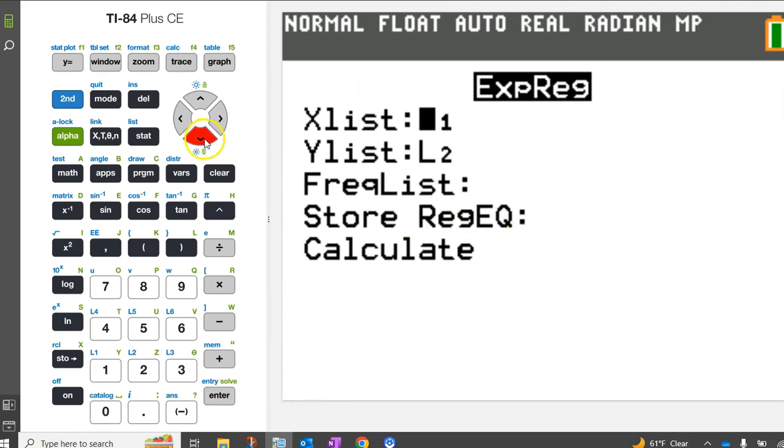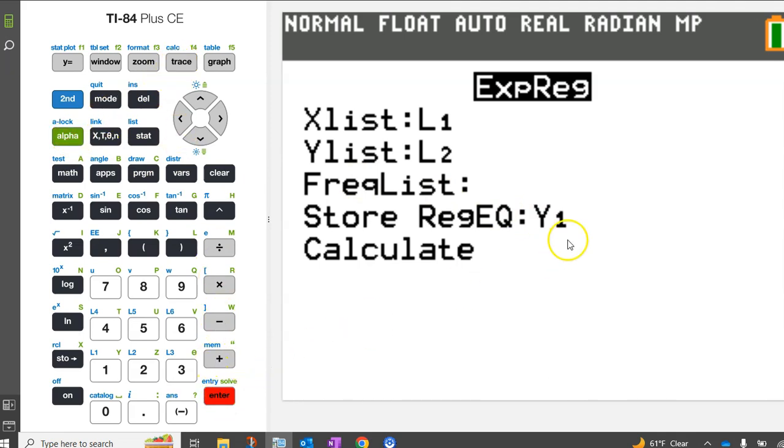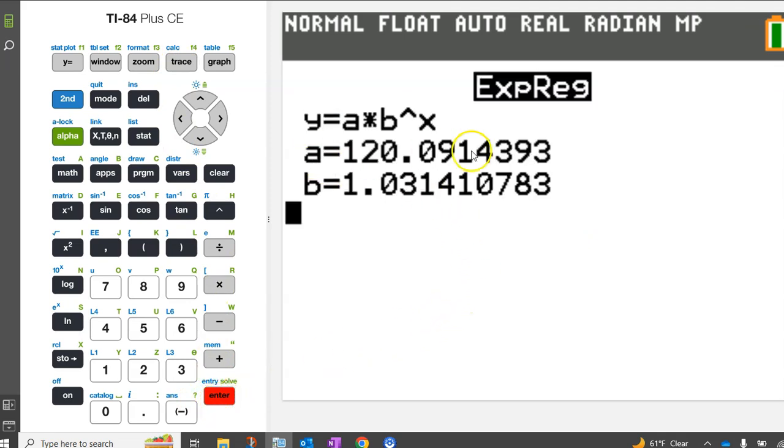Before you calculate, go to where it says Store Regression Equation and tell the calculator to store the equation in Y1 by hitting alpha, trace, enter. Now hit ENTER a couple more times, and there it is.